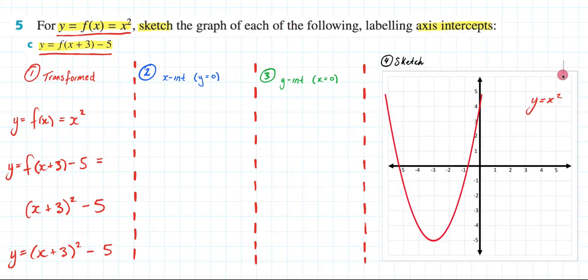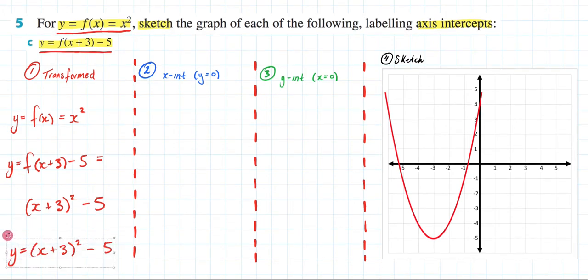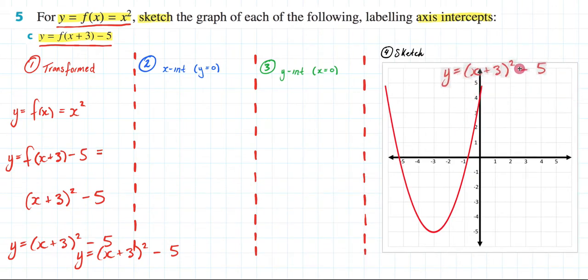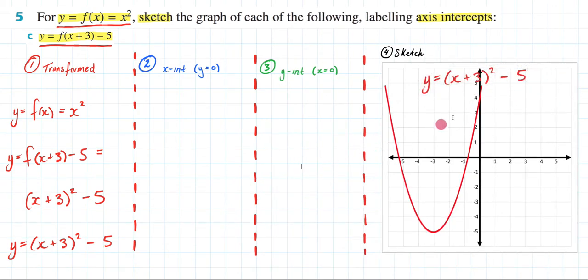So no longer do I have y equals x squared. I now have y equals x plus 3 squared minus 5. So let me write that. Let me put that here. Actually, can I? Look at that, I can shrink it. Magic of computers.